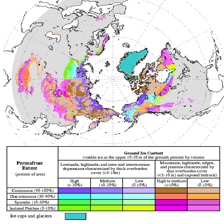According to the IPCC Fifth Assessment Report, there is high confidence that permafrost temperatures have increased in most regions since the early 1980s. Observed warming was up to 3 degrees Celsius in parts of northern Alaska from the early 1980s to the mid-2000s, and up to 2 degrees Celsius in parts of the Russian-European north. In Yukon, the zone of continuous permafrost might have moved 100 kilometres poleward since 1899, though accurate records only go back 30 years. It is thought that permafrost thawing could exacerbate global warming by releasing methane and other hydrocarbons, which are powerful greenhouse gases, and could encourage erosion because permafrost lends stability to barren Arctic slopes.